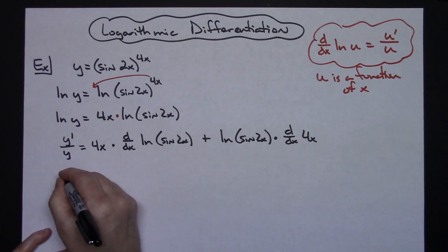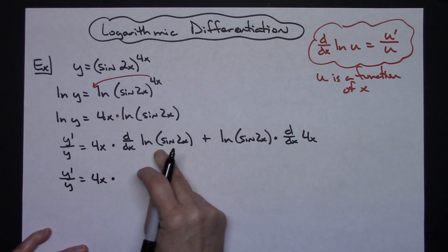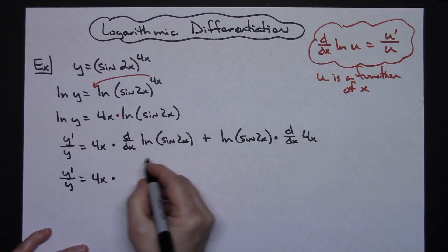So this y prime over y is going to stay. I'll have the 4x here. Implementing u prime over u, keeping chain rule here, we're going to have 2 cosine 2x and then all over sine of 2x plus.